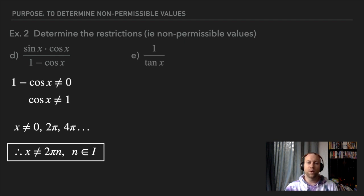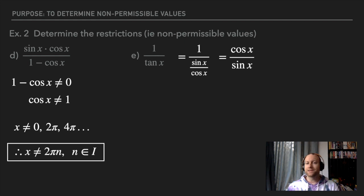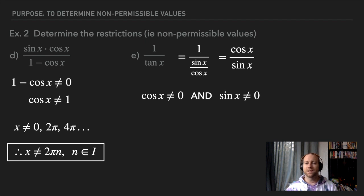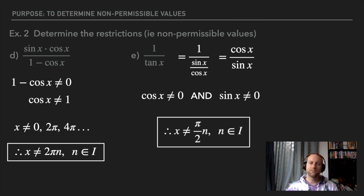One more: one over tan x. When we expand and simplify, one over tan x is cotangent x. But we also notice that when we have one over tan x, sine appears in the denominator, and cosine also appeared in a middle term. So again we have the restriction that both cosine x is not equal to zero and sine x is not equal to zero, giving us that same generic restriction as before.